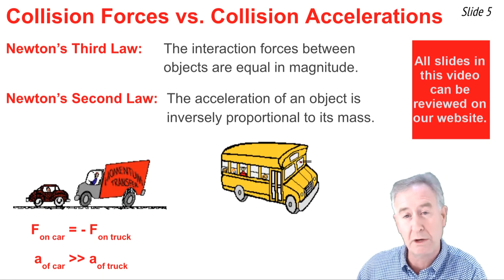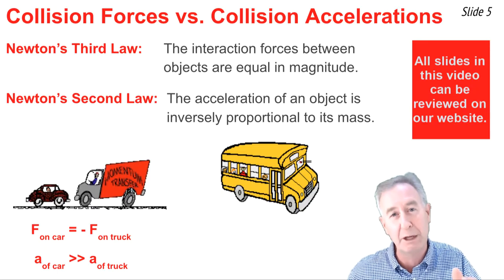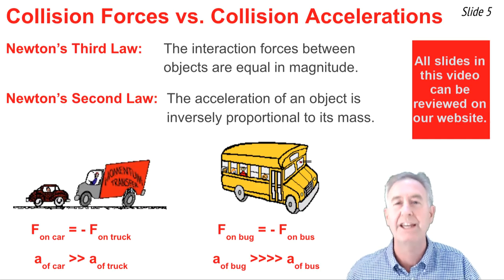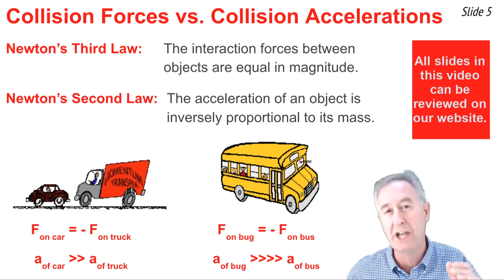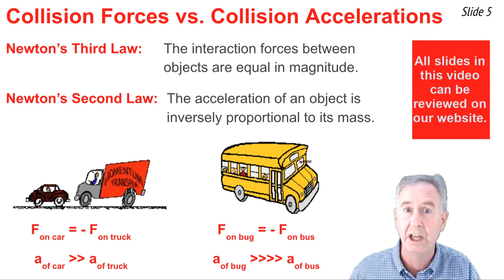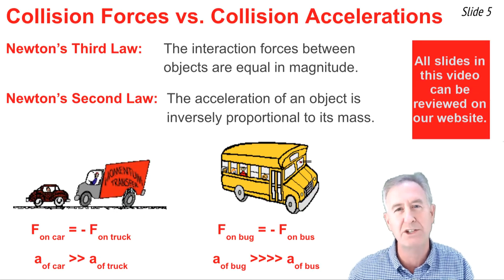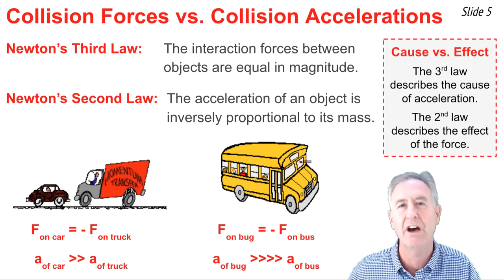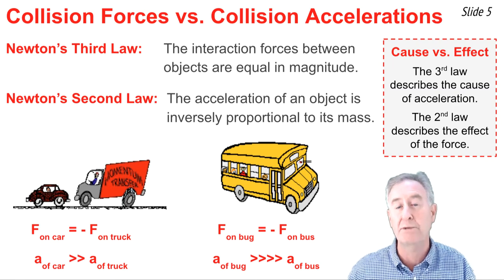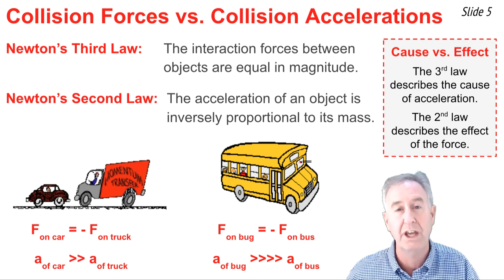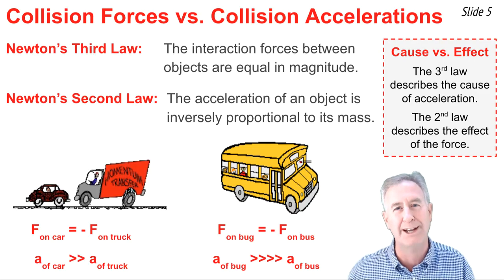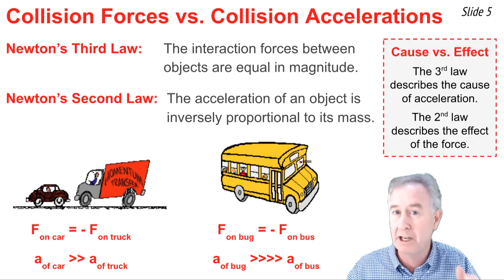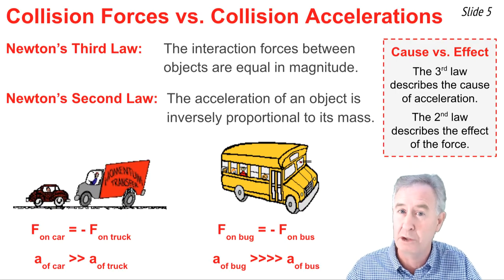Or consider the extreme case of an unfortunate bug colliding with the windshield of a bus. Newton's third law says that the force on the bug is equal to the force on the bus. But Newton's second law says that the acceleration of the bug will be humongous and the acceleration of the bus will be minuscule. This is an issue of cause and effect: Newton's third law describes the cause of an acceleration — a force of equal magnitude on both objects — but Newton's second law describes the result, an acceleration that can be different depending upon the mass of the two interacting objects.